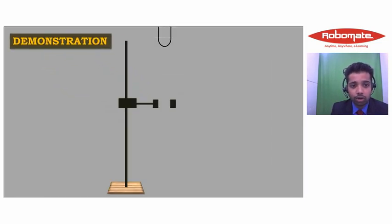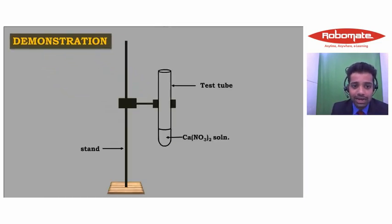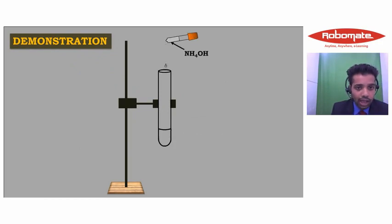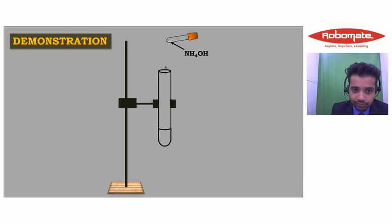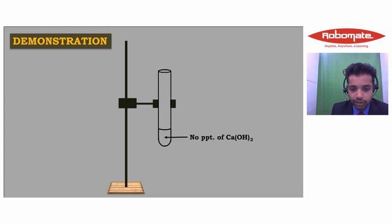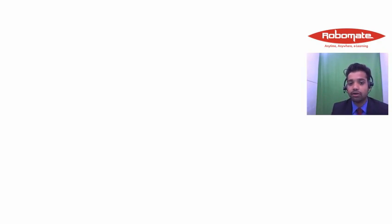So there is no reaction and there will be no demonstration as well — it is very simple. You take calcium nitrate in the dropper and add ammonium hydroxide. What you will see is nothing happening — no precipitate of calcium hydroxide.